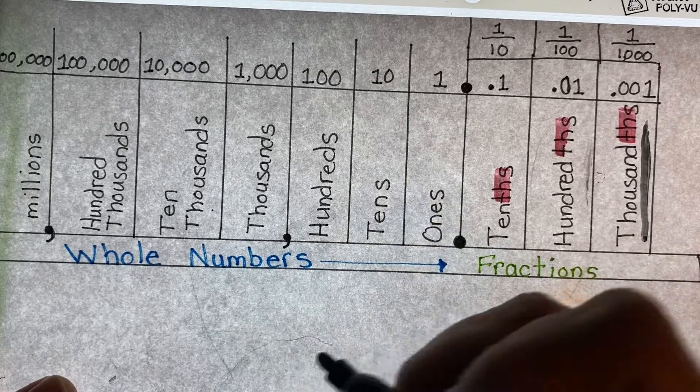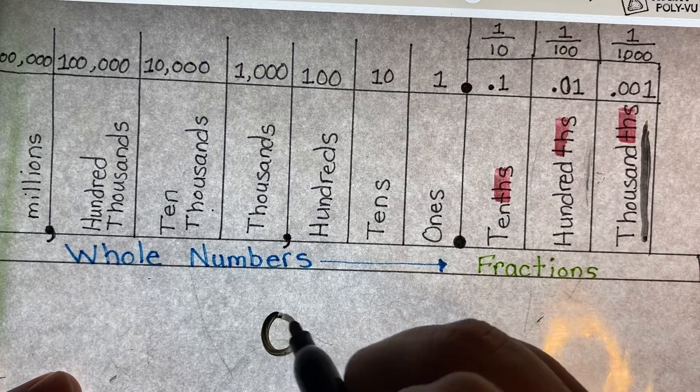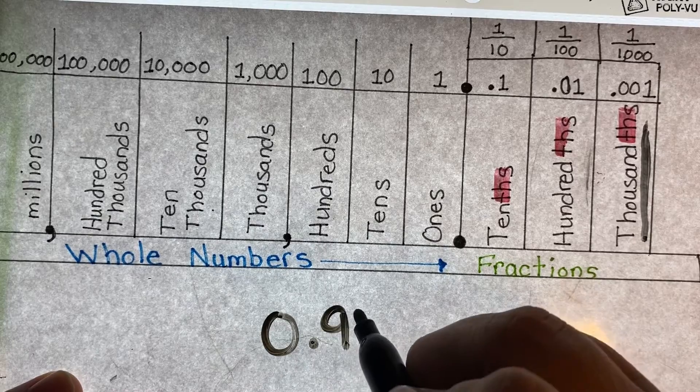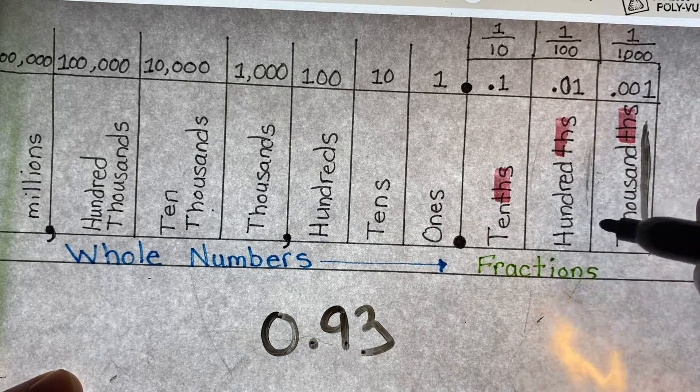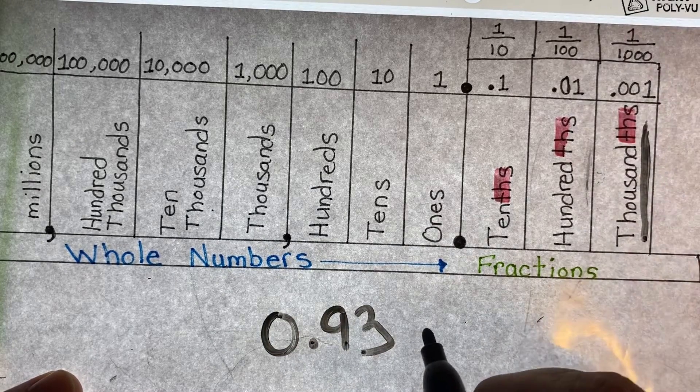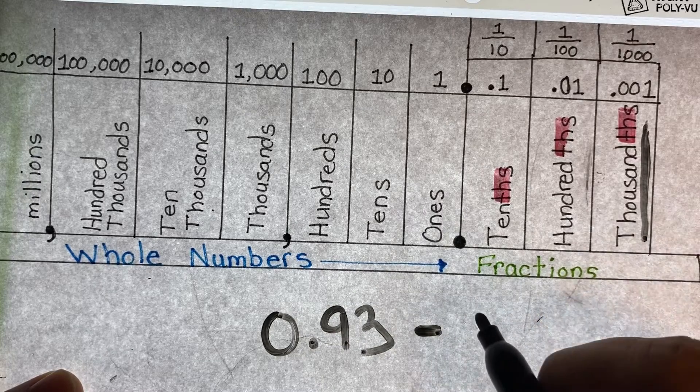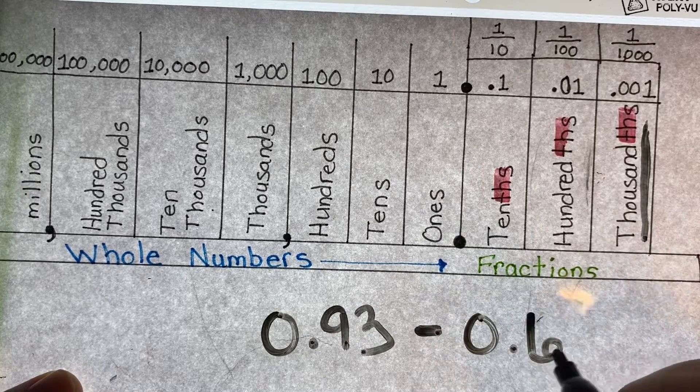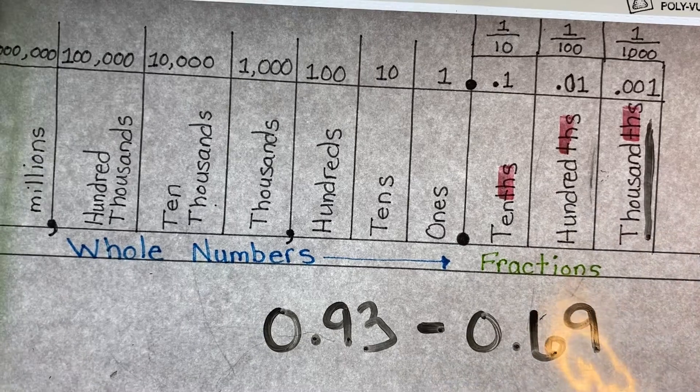Let's say I have two numbers. Ninety-three hundredths, and from that I'm going to take away sixty-nine hundredths.